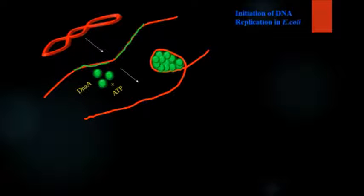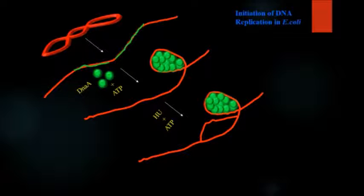More than 20 DNA A protein molecules bind at the 9 base pair sequences tandem repeats which then require the histone-like protein and ATP to unwind at the 13 base pair site.